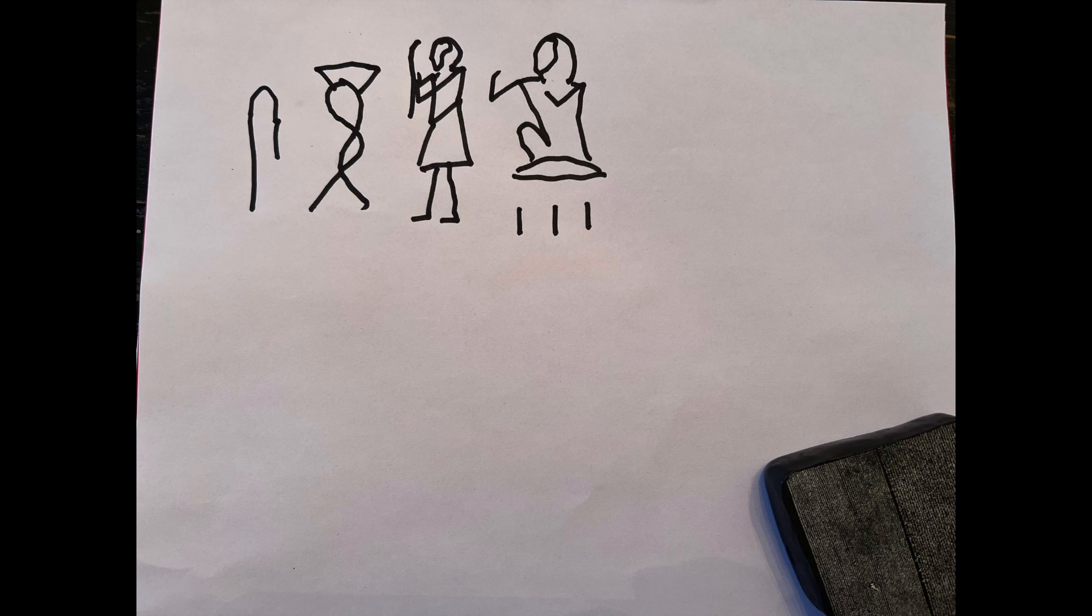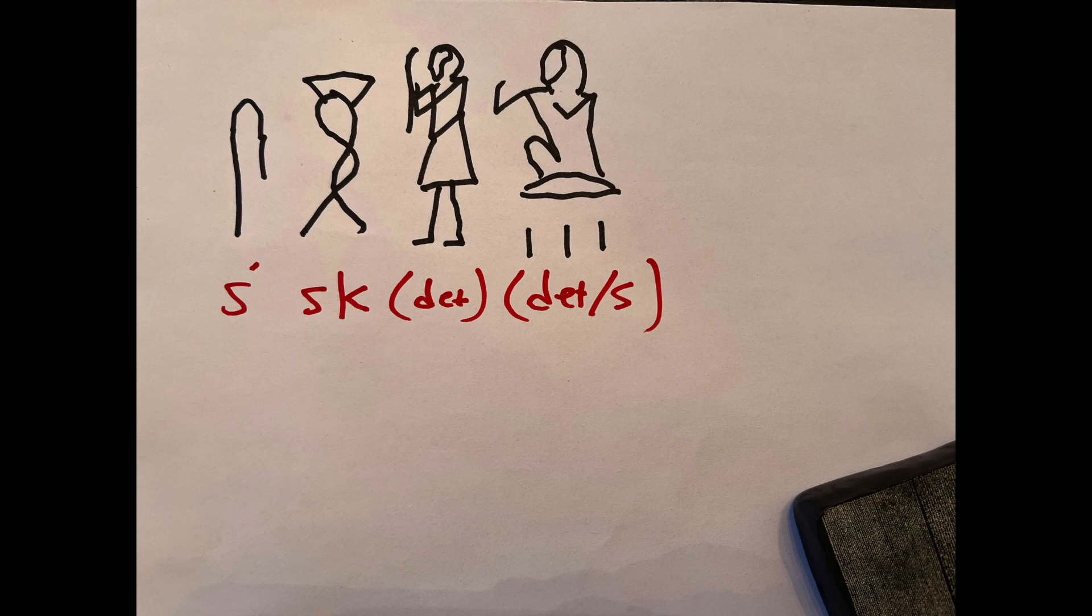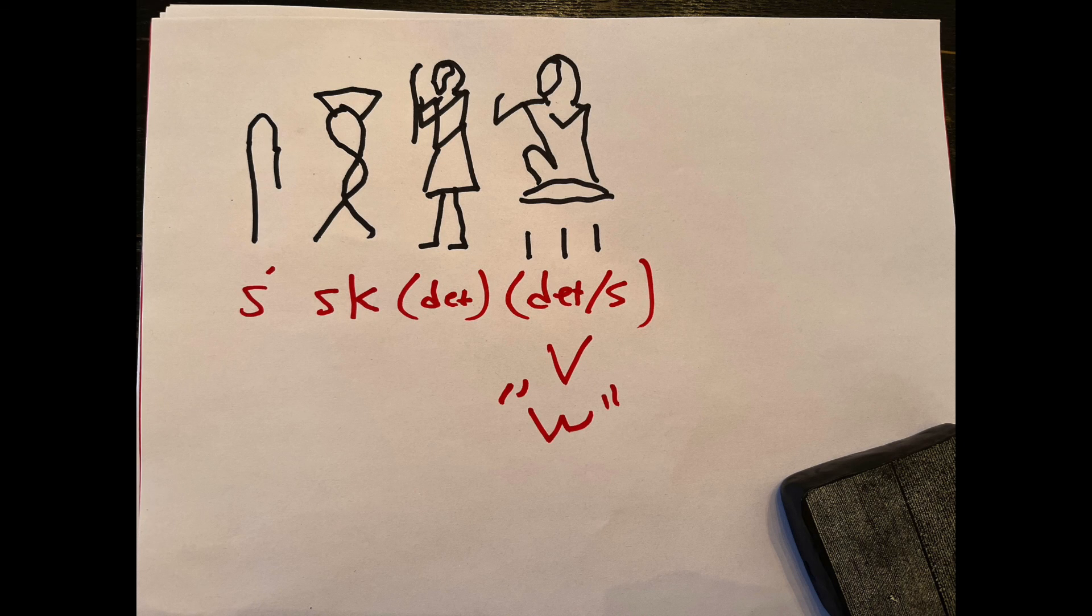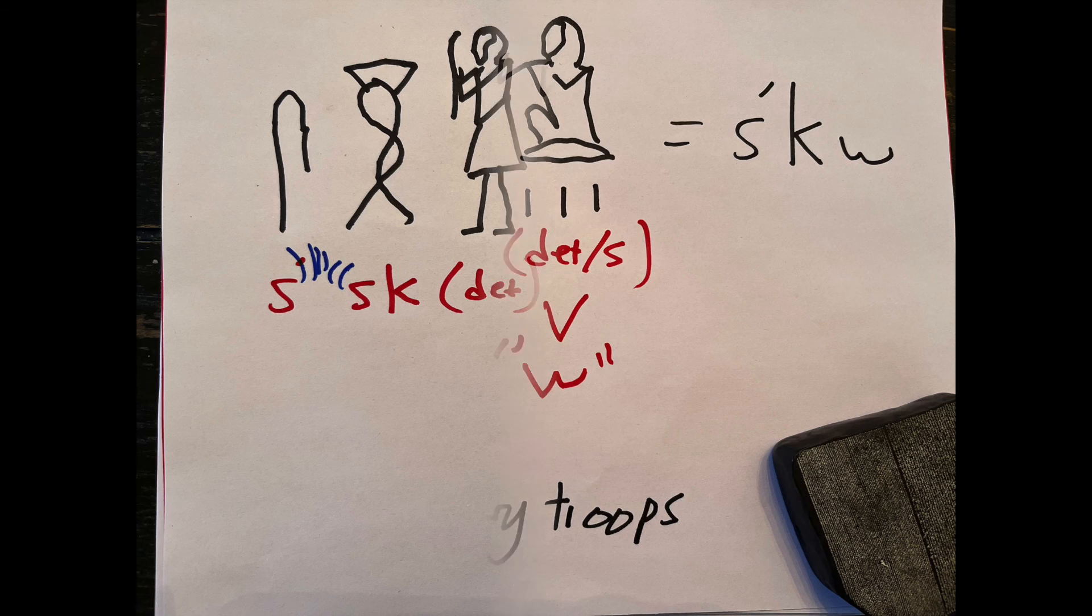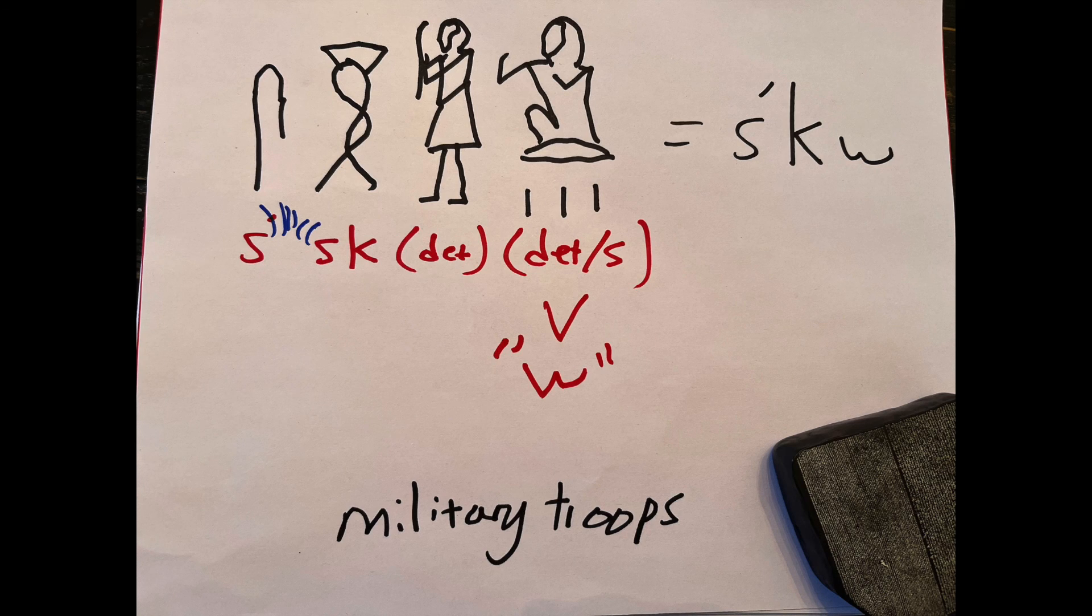Here's some words that use that. We have S and then the broom, and then we have two different determinatives, and this one's actually interesting because you'll notice one of the determinatives is plural with the three strokes. So we have the man with the sword and then the man sitting, and any time you have a person at the end, it's always a determinative. And if you have three strokes under a person, it means plural, meaning there's more than one person, and this can also add a W. W is the ancient Egyptian version of having an S at the end, like bird or birds.